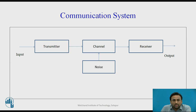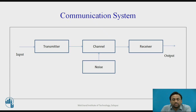As we know, information may be of any type — it may be video, audio, or digital input. It can be anything, and it has to be converted into an electrical signal. So the transducer is used in the transmitter, along with amplifiers, encoders, and decoders.